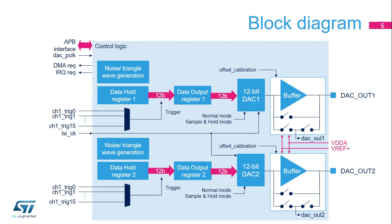This DAC block is supplied by VDDA and uses VREF+ as a voltage reference. The digital-to-analog converter is an APB slave that supports DMA requests to fill the data hold register. Either of the DAC OUTX signals can be disconnected from the corresponding output pin, which can be used as an ordinary GPIO. DAC OUTX signals can use an internal pin to connect to on-chip peripherals such as comparators and op-amps.